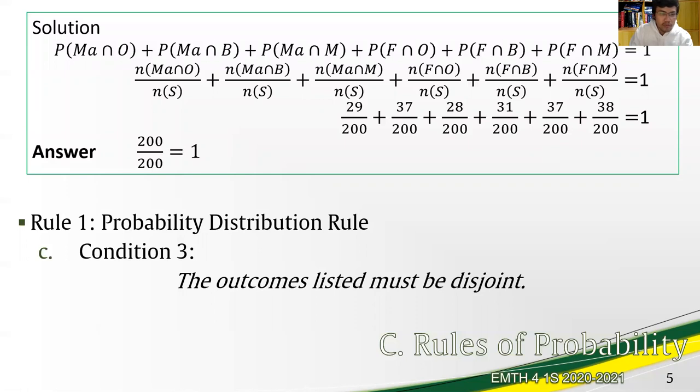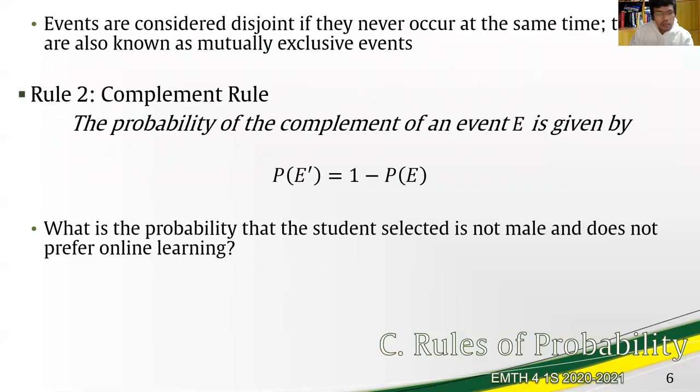The last condition of rule 1 states that the outcomes listed must be disjoint. This only means that they never occur at the same time or are mutually exclusive events. Take the case of males who prefer blended learning and females who also prefer blended learning. Those are disjoint because no element who are female, no matter their choice of blended learning, can be a male preferring blended learning. Again, disjoint outcomes or sets are mutually exclusive events.